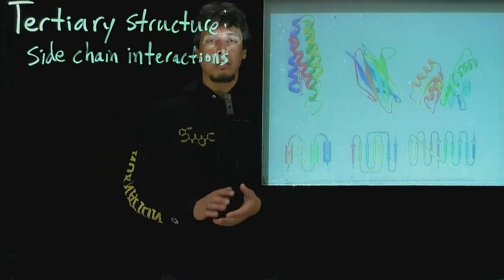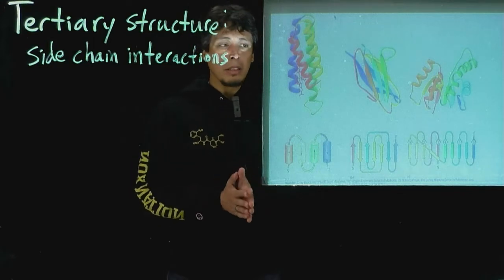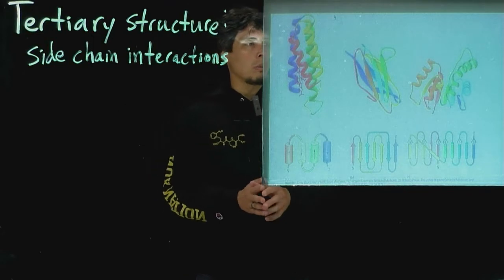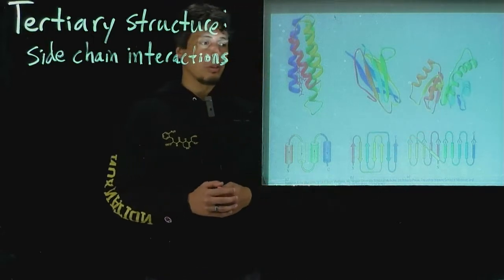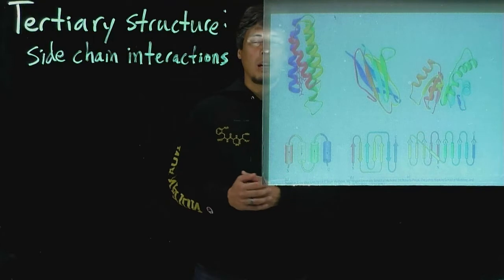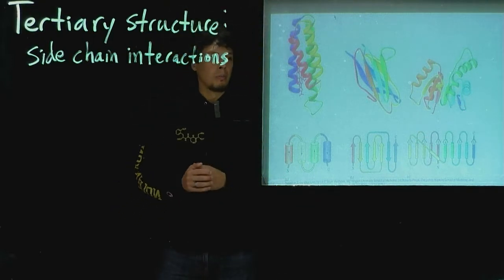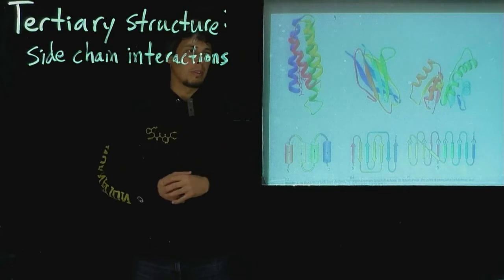Other types of proteins might be composed entirely of beta sheets, instead of alpha helices. And of course we can have proteins that have a combination of both, some alpha helices and some beta sheets that make up the overall 3D architecture of the protein.